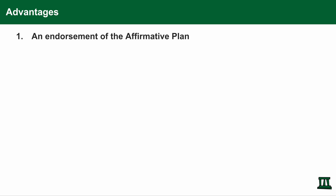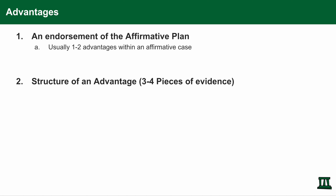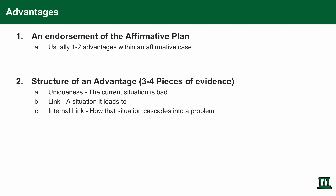Now let's talk about the advantages. Advantages are an endorsement of the affirmative plan — they show you why exactly the affirmative plan text is good. In a debate case, there are usually one to two advantages that you would read. An advantage is made up of three to four pieces of evidence. The first part is the uniqueness evidence, which specifies why the current situation is bad. The second piece is the link — what the current state of affairs could lead to. The third piece is the internal link, which says how a situation cascades into a problem. And lastly, the impact specifies how bad that problem is.